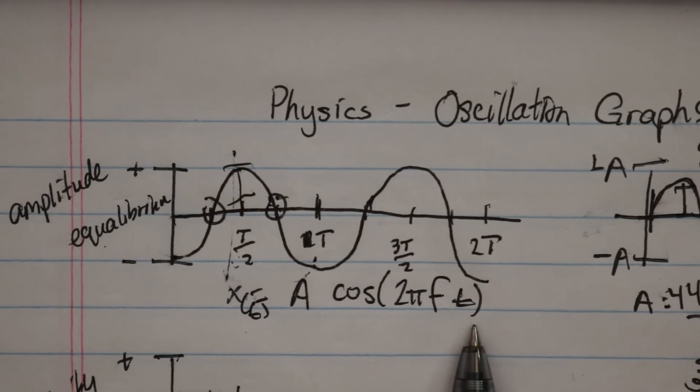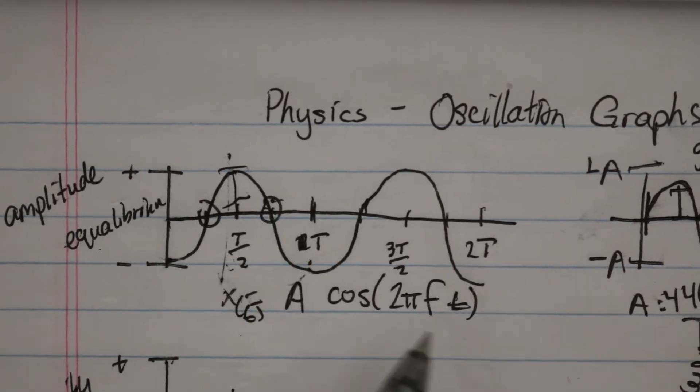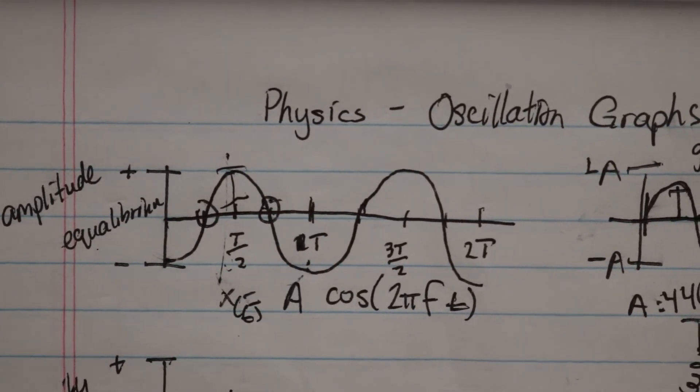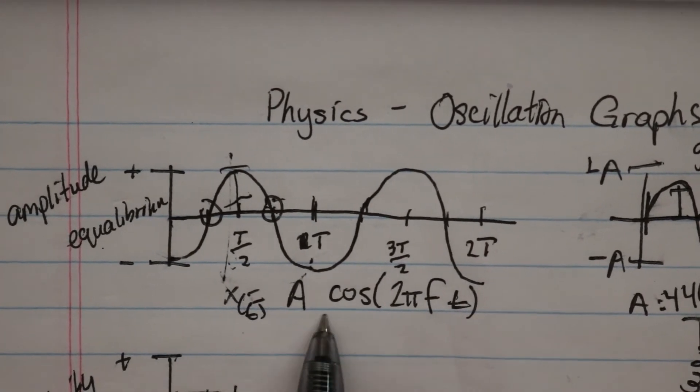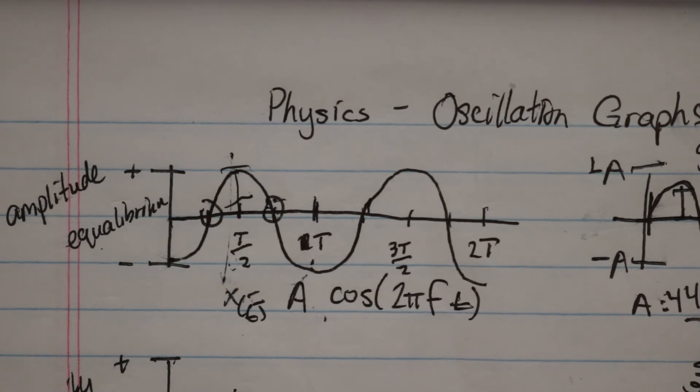We take our frequency. Time is going to be where are we in this oscillation, and then A is your amplitude. So if you're shown an equation and said what's the amplitude and you see it in this form, you just know that this front number is your amplitude and you don't really have to do any math.